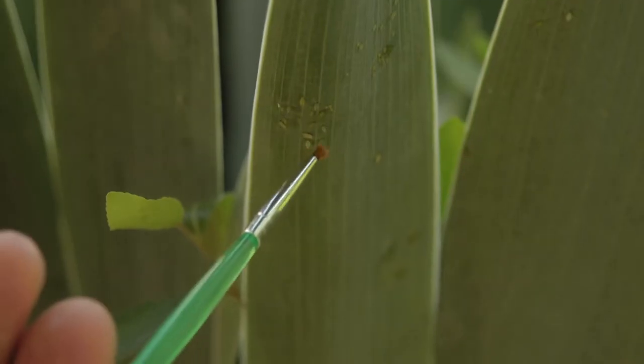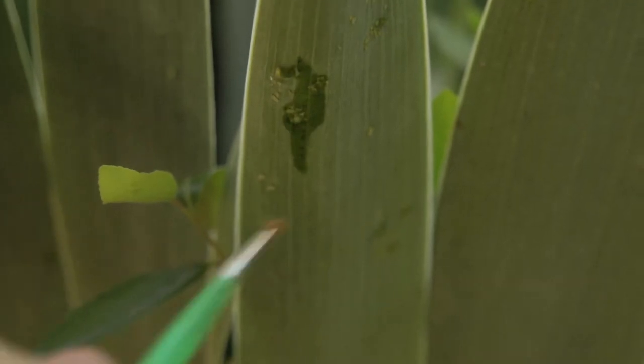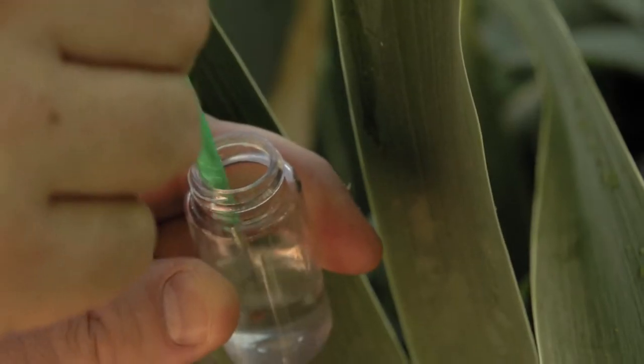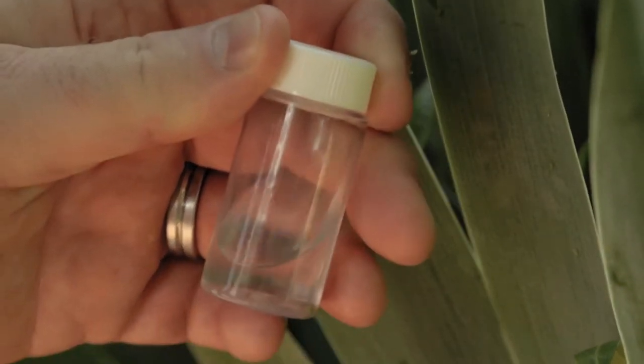To get the insects into the alcohol, you can use forceps or tweezers or you can grab a paintbrush, dip it in the alcohol, dab the insects, killing them, and then scoop them up with the paintbrush and swirl them around in the alcohol container.